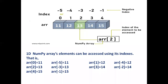Here we have a one-dimensional array. ARR is the one-dimensional array, and it has two types of indexing. We can do forward indexing and backward indexing. Forward indexing uses positive indices: 0, 1, 2, 3, 4. Backward indexing uses negative indices, starting from minus 1.